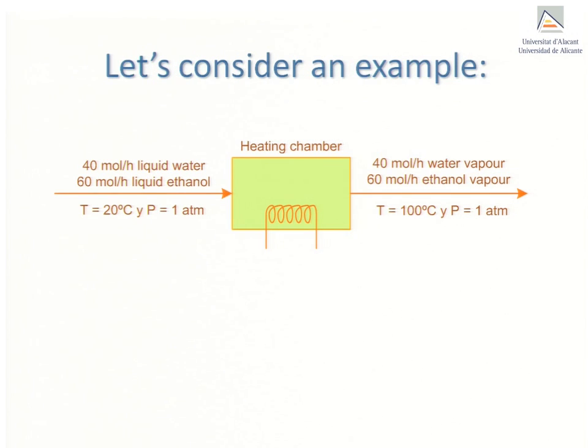Consider the process shown. A mixture of liquid ethanol and water undergoes a phase change because of heat Q supplied to it. A stream enters the system at 20 degrees Celsius and leaves it at 100 degrees C in the form of vapour. The pressure is kept constant throughout. It is assumed that we can neglect any heat generated or removed when the two substances mix.